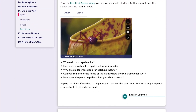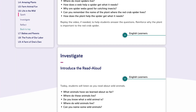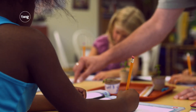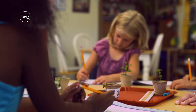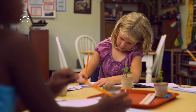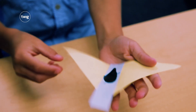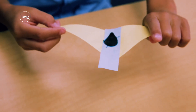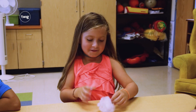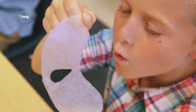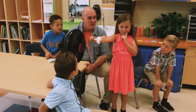English learners are provided with differentiated support at point of use. Students are now applying the concept of patterns to living things, both plants and animals. Then it's time to demonstrate their thinking — modeling plant parts individually using craft materials unleashes students' creativity to visualize their understanding of plant structures.